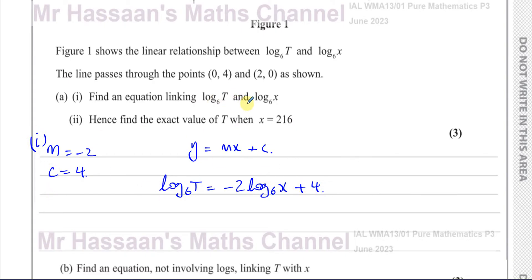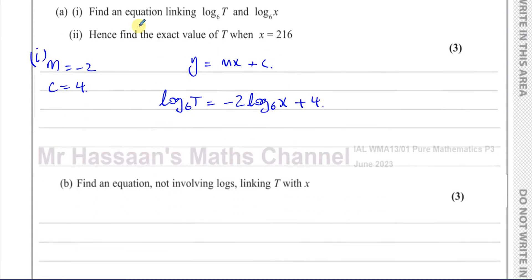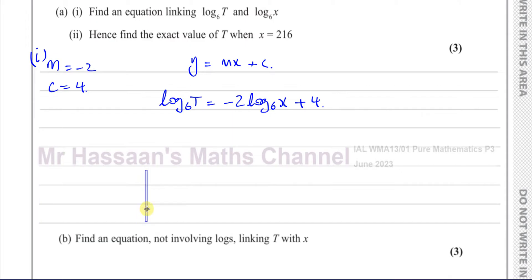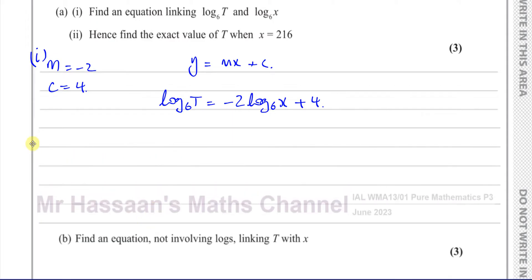The equation linking log base 6T and log base 6X. Now we've got to do part 2. Part 2 says, hence, meaning using this equation we just found, find the exact value of T when X is 216. So we replace X with 216. We have log base 6 of T equals minus 2 times log base 6 of 216 plus 4.